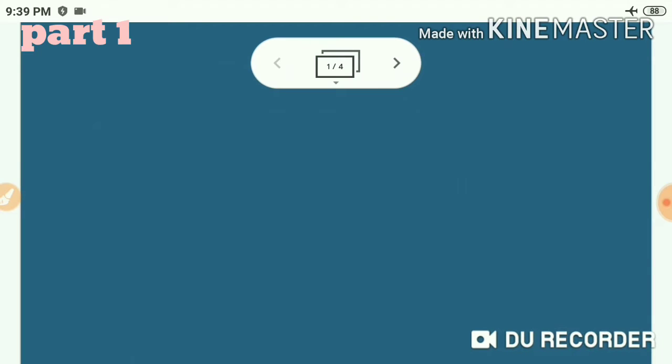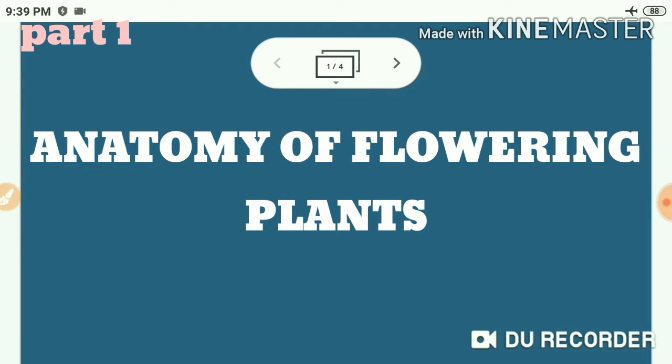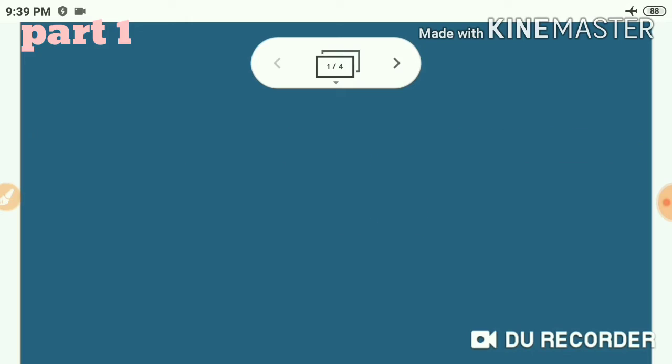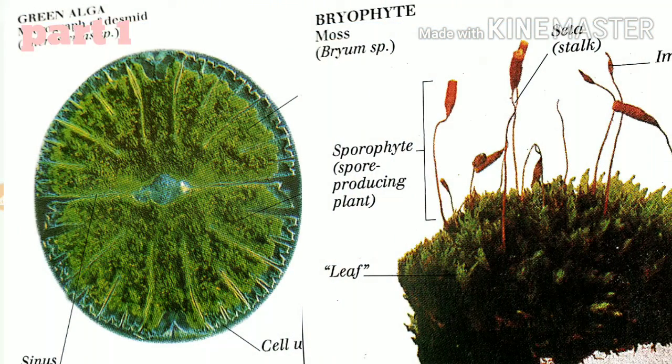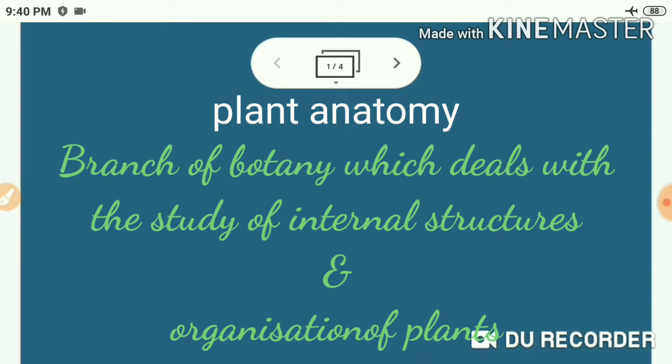The next chapter that we are going to start with is anatomy of flowering plants. In the plant kingdom both unicellular and multicellular members are present. In the case of unicellular, the same cell performs all the functions. But as evolution progressed, cells became organized into distinct groups called tissues to perform specific functions. Here we are going to study the internal structure of flowering plants. The branch of botany which deals with the study of internal structures and organization of plants or plant organs is called plant anatomy.